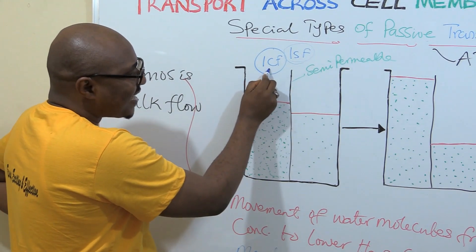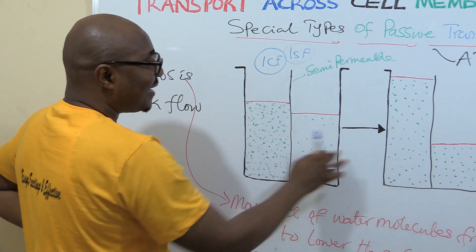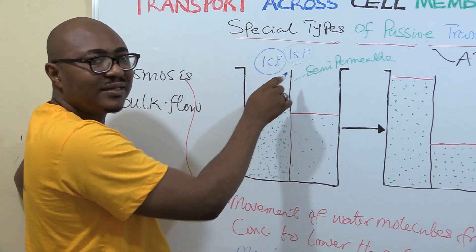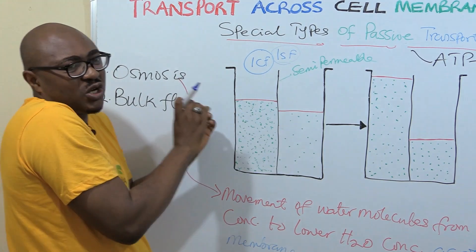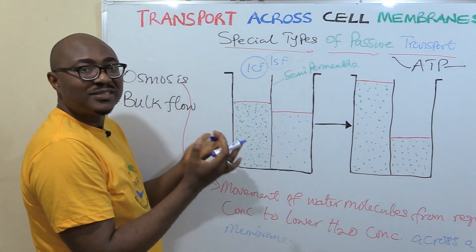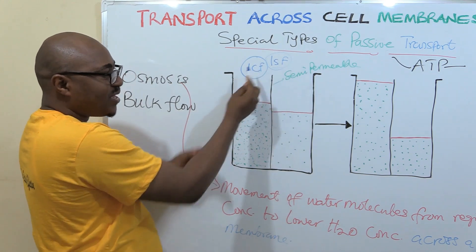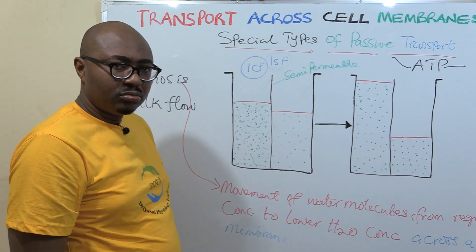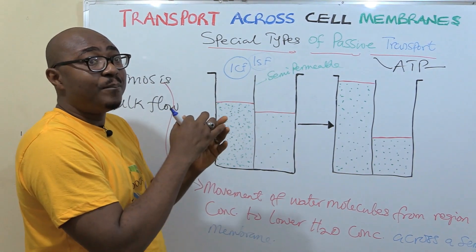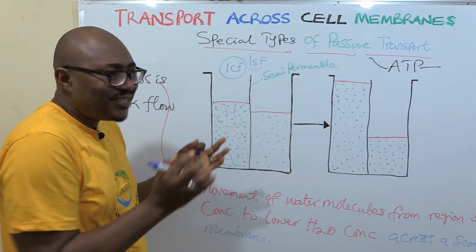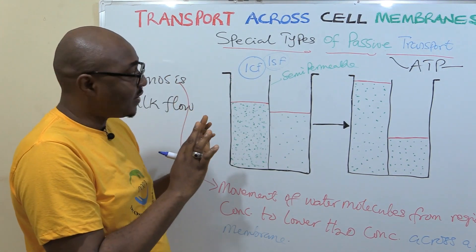So, water is higher here and lesser here. So, water will move from here to here so that it wants this balance. What will happen when water moves from here to here? That means this cell will shrink. Are you getting it? The cell will shrink because it has lost water. But if it happens that this place has more water than this place, water will move from here to here. It will make the cell swell.